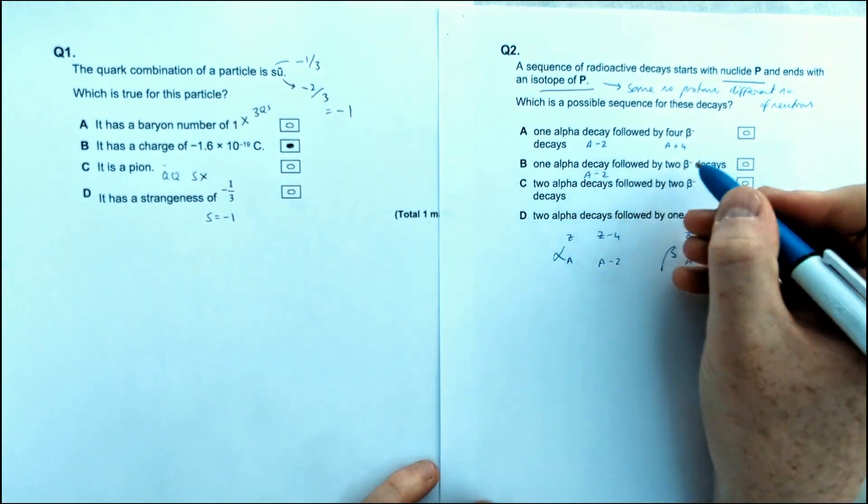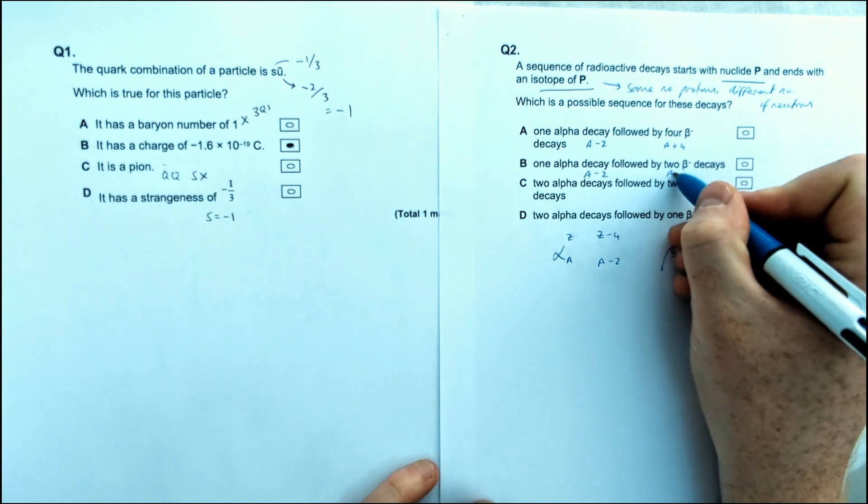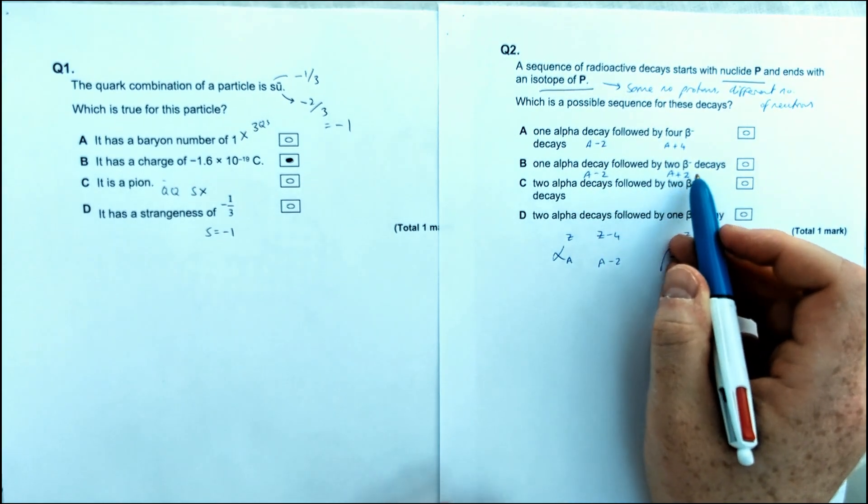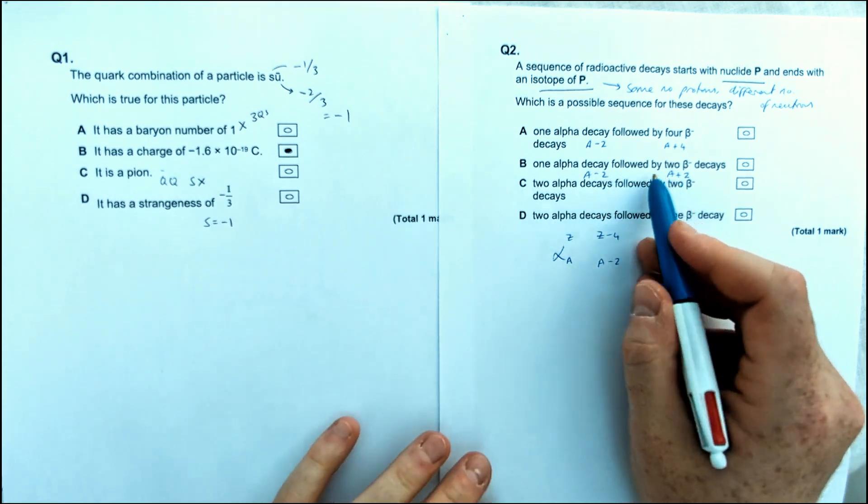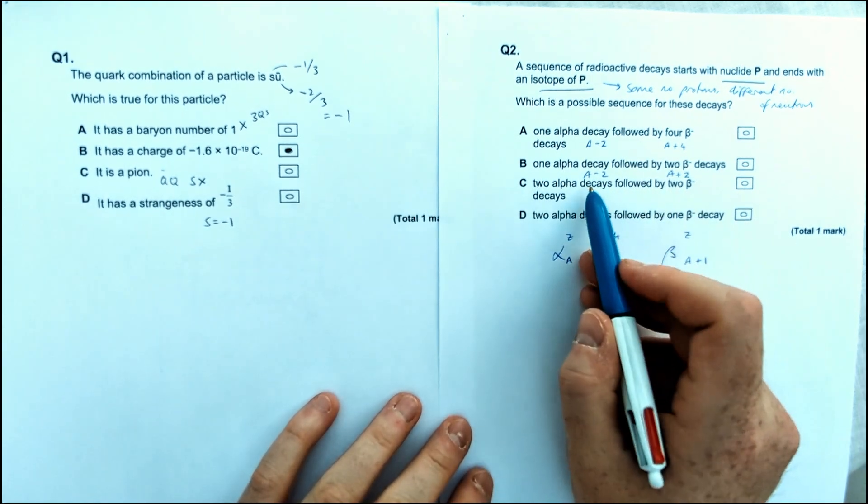1 alpha decay, so A minus 2, followed by 2 beta plus decays. Yeah, it looks like it could be this one because we've got the same atomic number or same proton number as there was before. Let's just go to the other ones just to be sure.